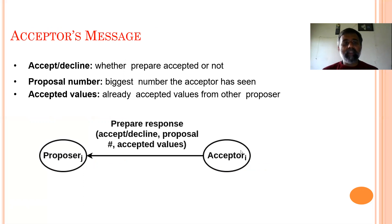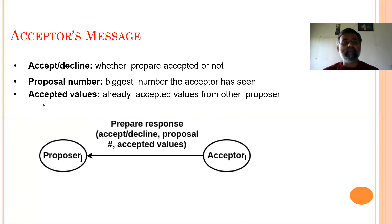After that, the acceptor will send an accept message or decline message — whatever the result of the prepare phase. The response from the acceptor includes: accept or decline, the proposal number accepted, and the already-accepted values from other proposers.